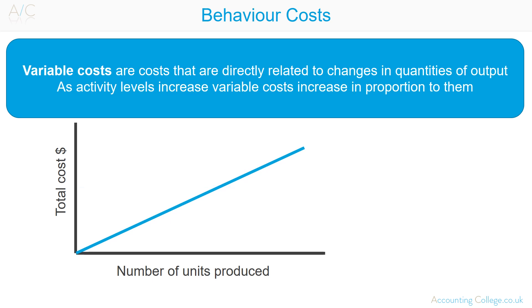Variable costs are costs that are directly related to changes in quantities of output. As activity levels increase, variable costs increase in proportion. So for example, if the number of units produced doubles, so will the variable costs, or if units produced go up by 10%, variable costs go up by 10% also.